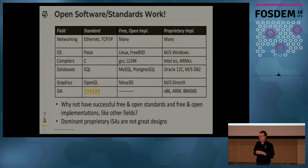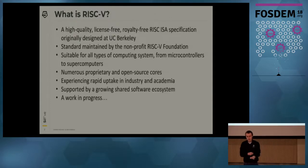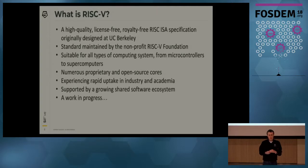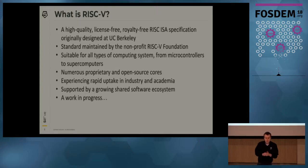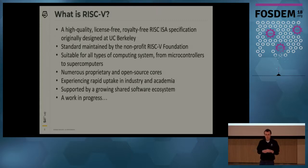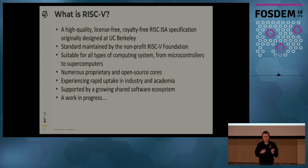So why is there no free and open ISA standard? It turns out the field is dominated by proprietary ISAs and they're really not great designs. RISC-V is a high-quality, license-free, royalty-free ISA specification, originally designed at UC Berkeley. The standard is now maintained by a non-profit organization, like many other industry standards.